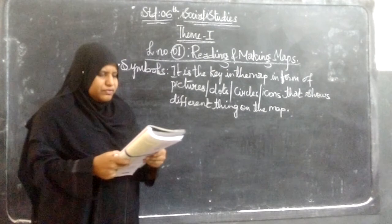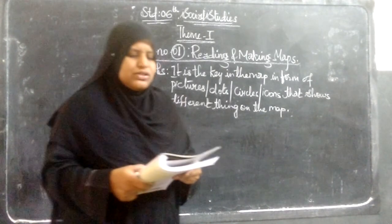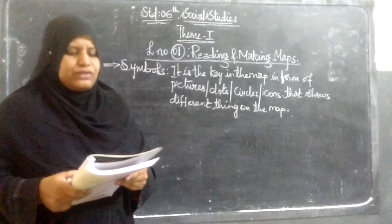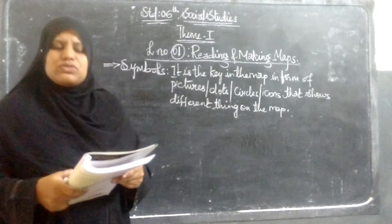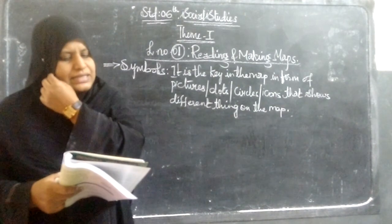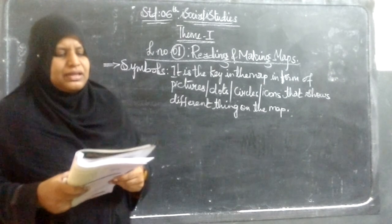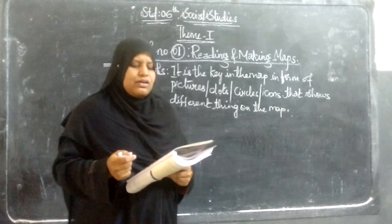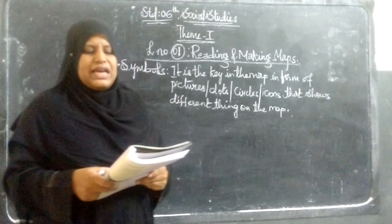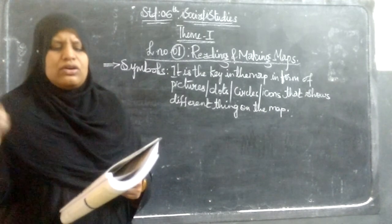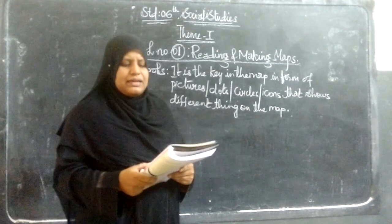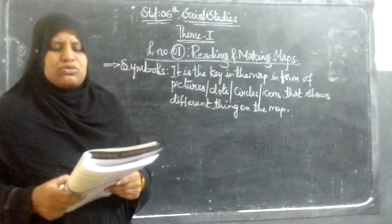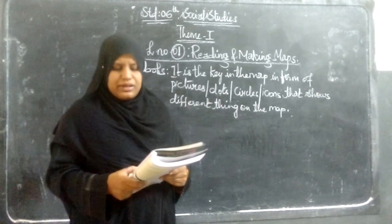Maps are too small for us to draw pictures of the things shown on them. For example, we cannot draw the real house, bus stand, or vehicles as it will take too much space on the map. Therefore, we always show things on a map with the help of symbols. You may have noticed that on a district map, villages and towns are shown with a dot or circle. Map makers prepare symbols appropriate to their needs, but some common symbols known as conventional symbols are also used.